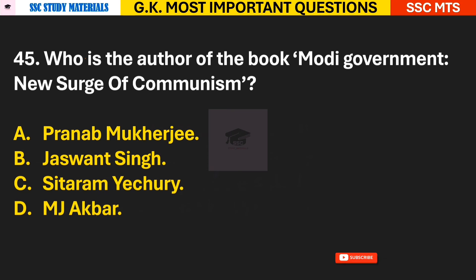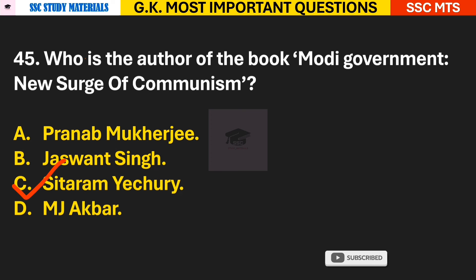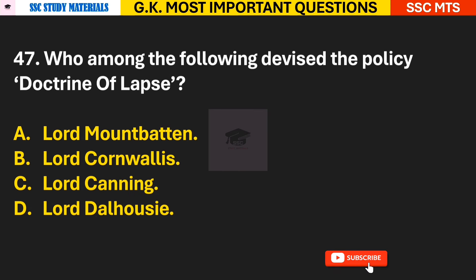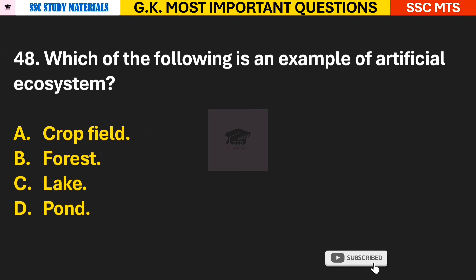Question 45: Who is the author of the book 'Modi Government: New Surge of Communism'? Answer C — Sitaram Yechury. Question 46: Aihole was the capital of which dynasty? Answer A — the Chalukyas. Question 47: Who among the following devised the policy doctrine of Lapse? Answer D — Lord Dalhousie.